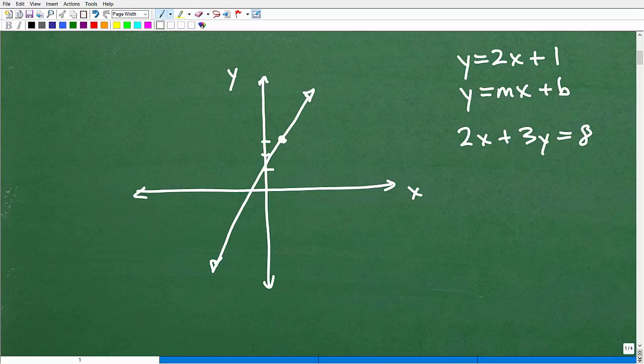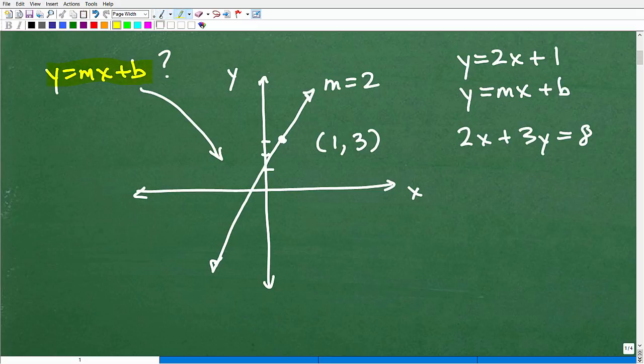What we're going to be talking about is the following. We're going to be given some information about a line. Let's take this line, for example. And let's say, I have a line and this line has a slope of two and it passes through the point, let's say, one, three. So this line has a slope of two and it passes through the point one, three. What is the equation of this line? What is the equation? And generally in y equals mx plus b form.